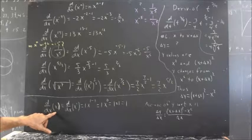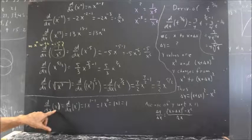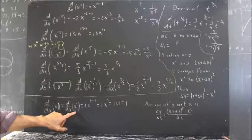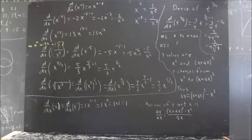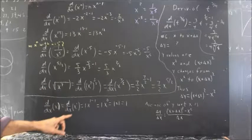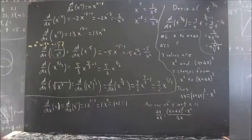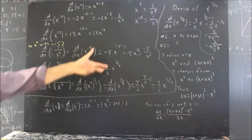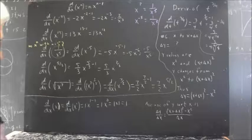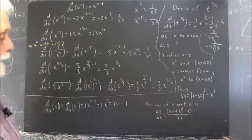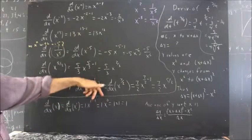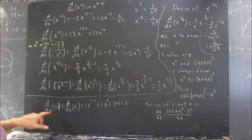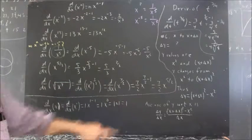What's the derivative with respect to x of x? Well, x is of this form — x is a power function with n equal to 1; x is just x to the 1. If we apply the rule, we get 1 times x to the 1 minus 1, which is 1 times x to the 0. And x to the 0 is 1, because any quantity to the 0 power is 1. So we have 1 times 1, which is just 1. The derivative with respect to x of x is just 1.